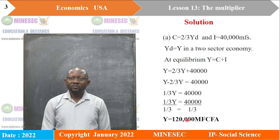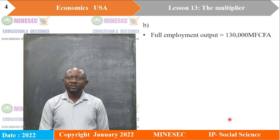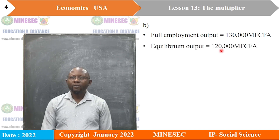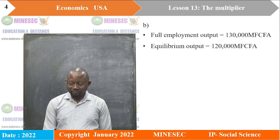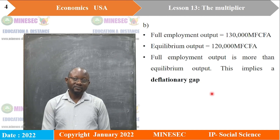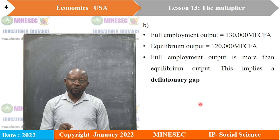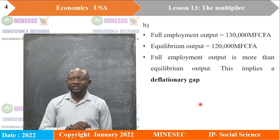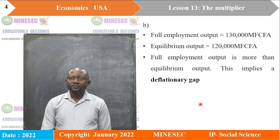Our equilibrium is 120,000 million francs. Our full employment output was given as 130,000 million francs. We discover that the full employment output is more than the equilibrium output. This shows that there is a deflationary gap, because the full employment output is 130,000 million francs while the equilibrium output we just calculated is only 120,000 million francs.